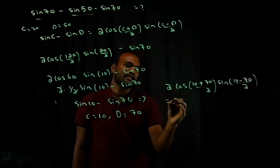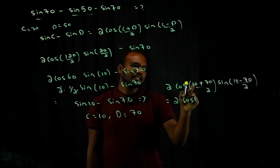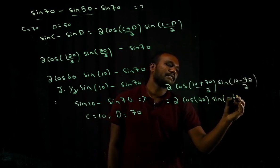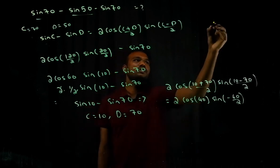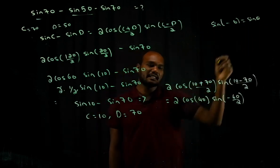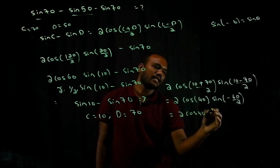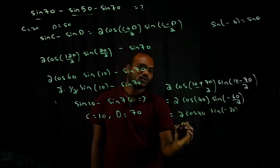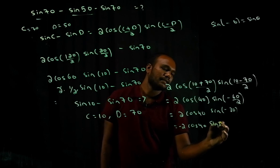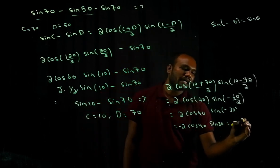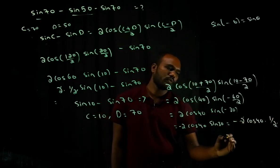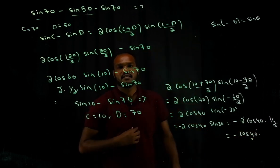Using sin(−θ) = −sin θ, this becomes 2 cos 40° × (−sin 30°) = 2 cos 40° × (−1/2). The 2 and 2 cancel, giving the final answer: −cos 40°.